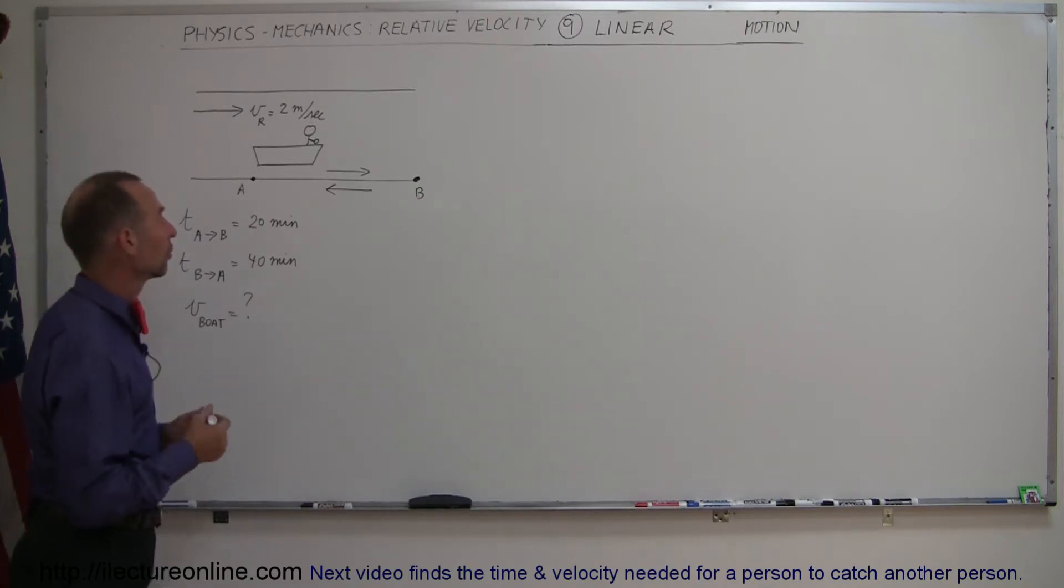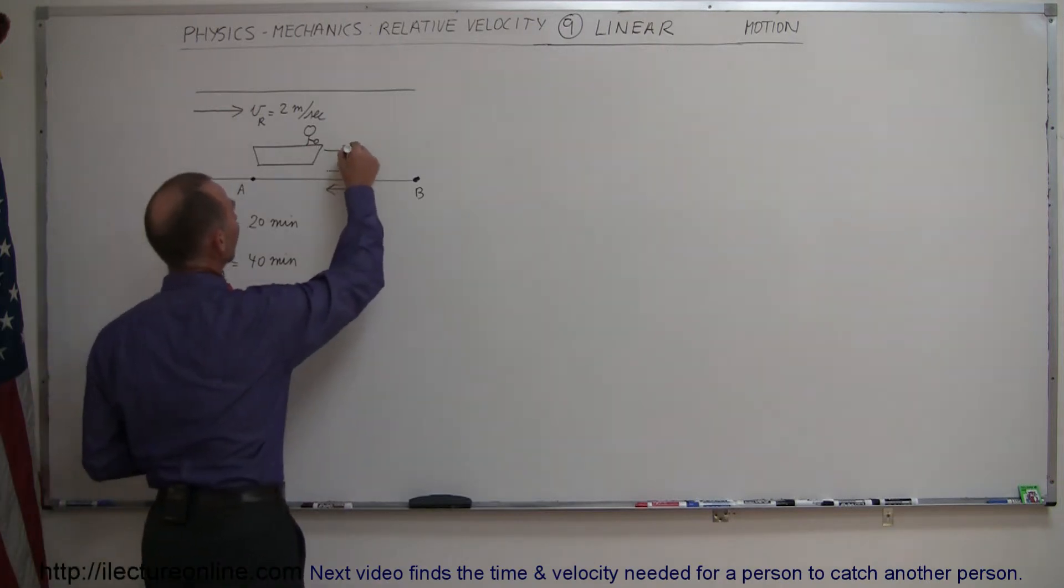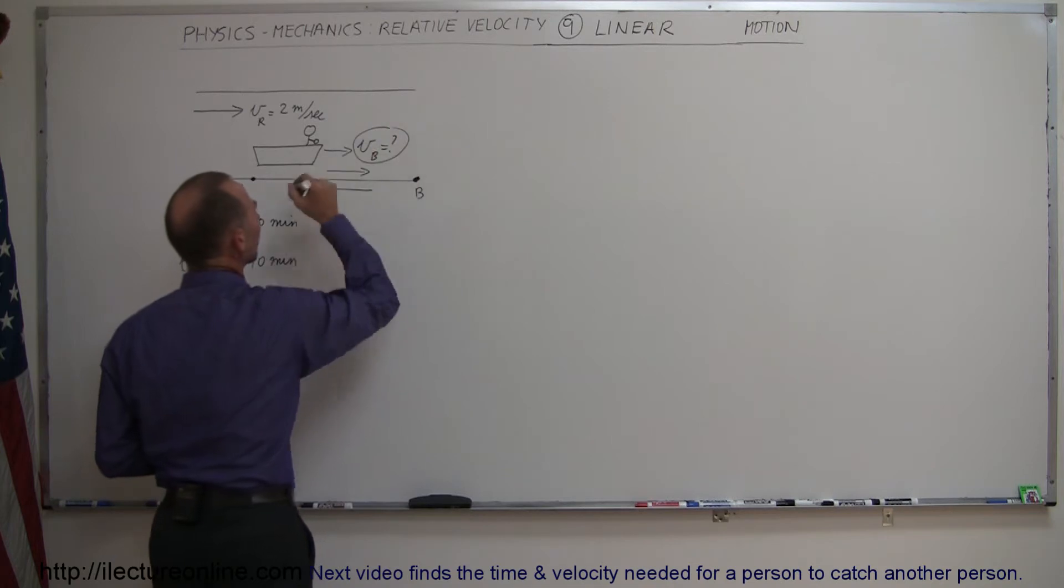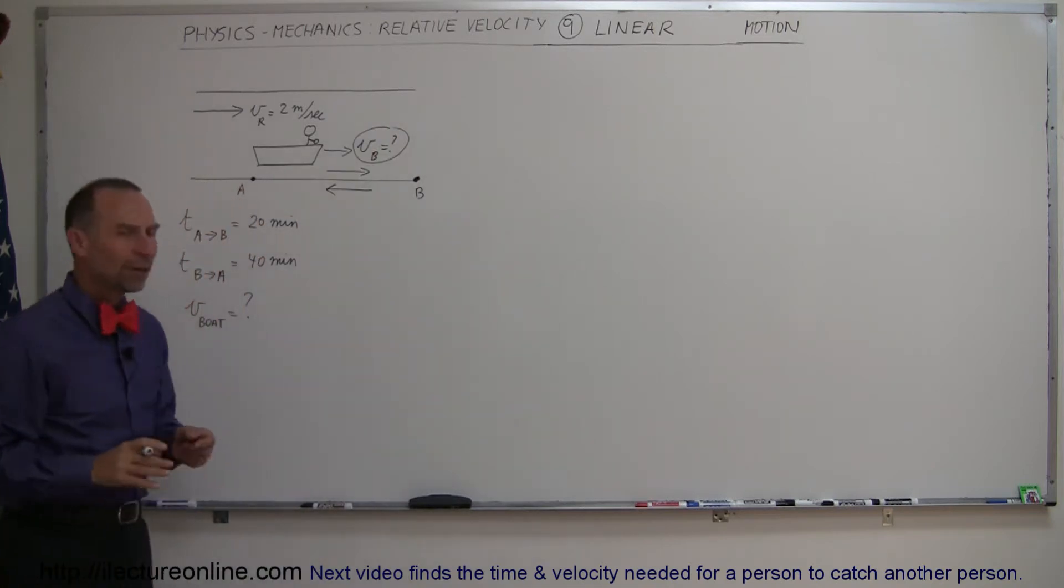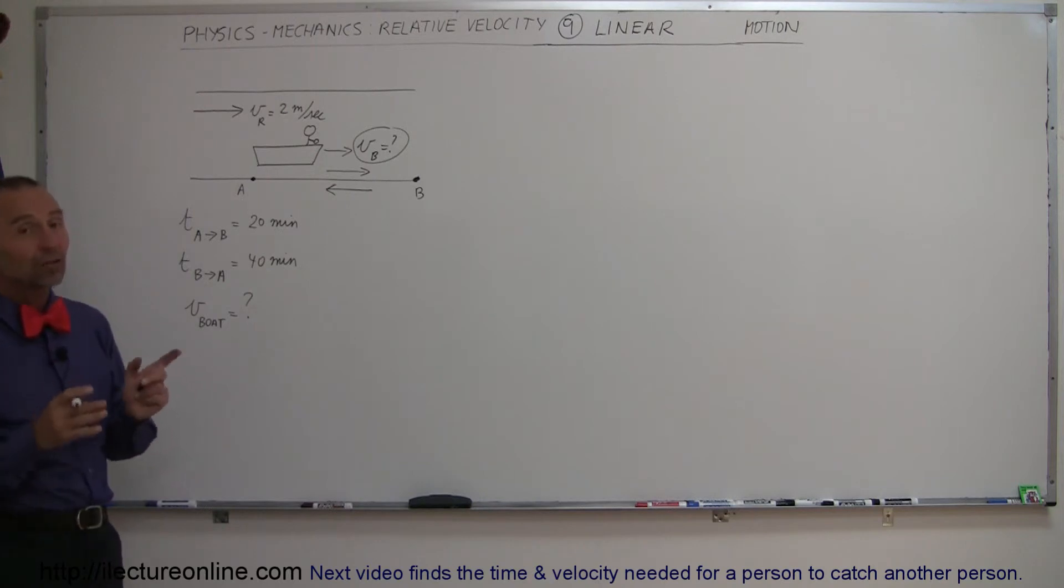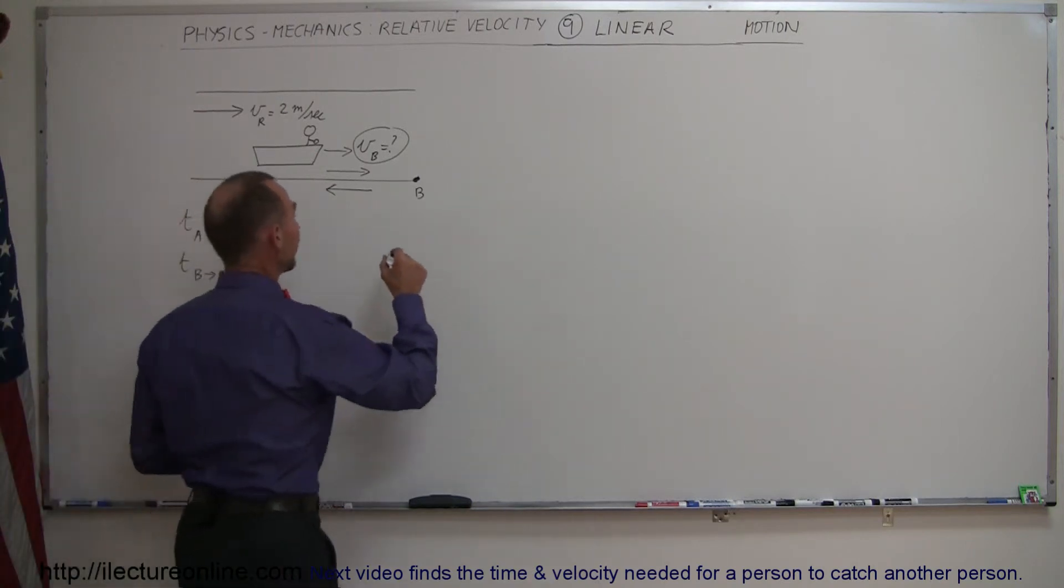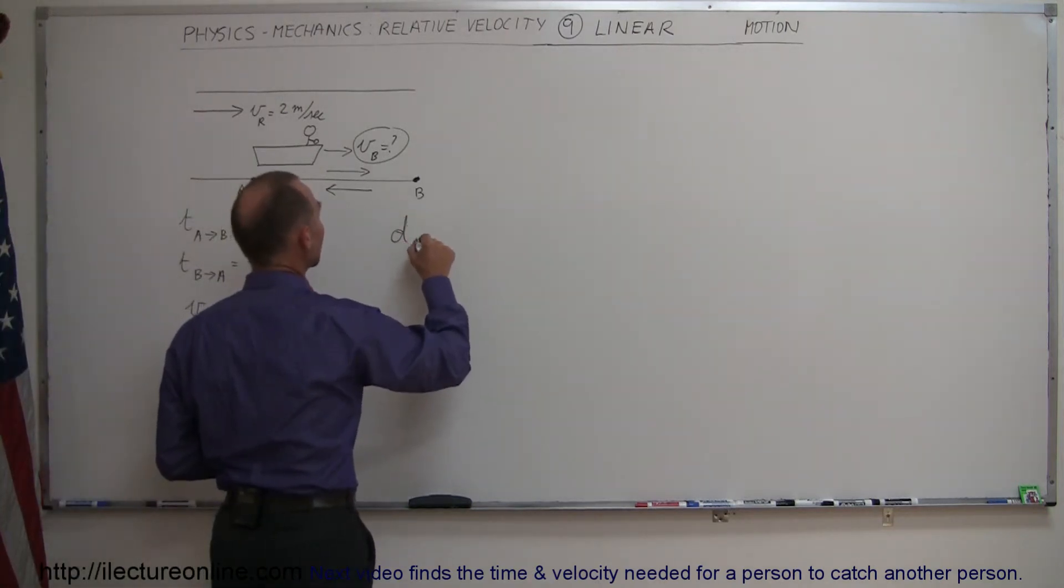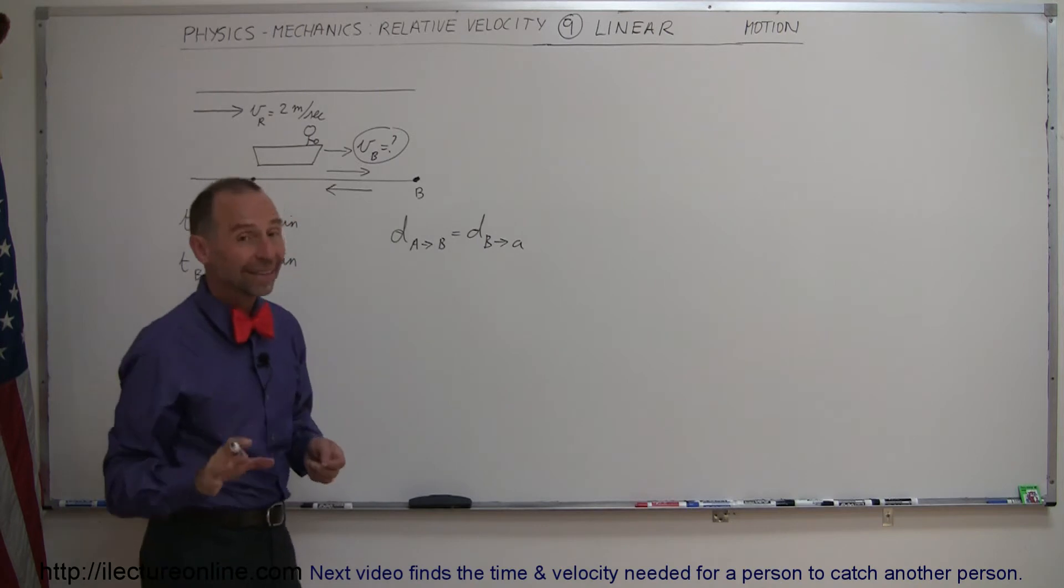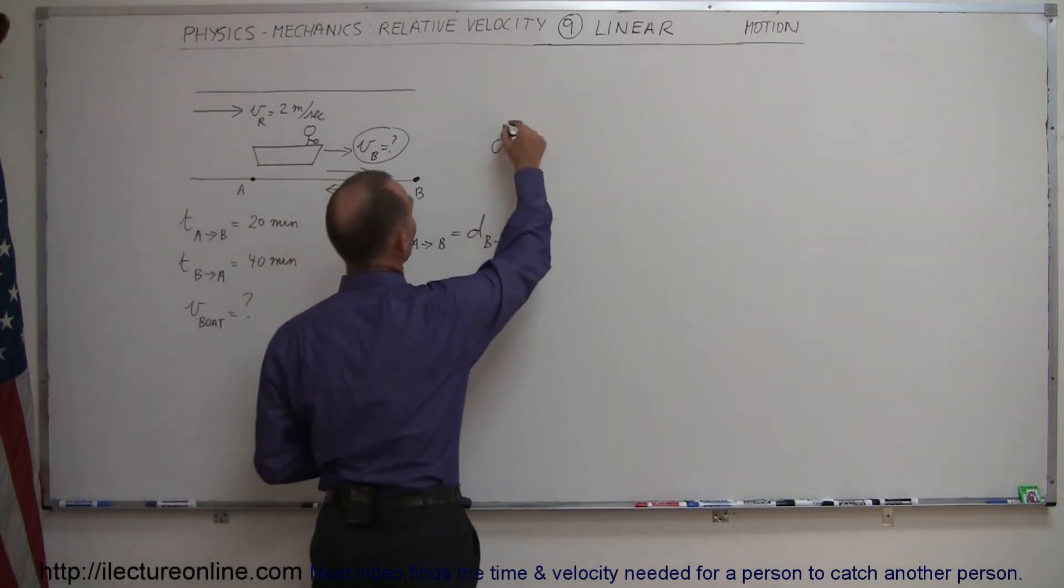Alright, so the question then becomes what is the V of the boat relative to the water that it's in? So the way you approach a problem like this is to realize that the distance traveling in both directions is equal. So that means that the distance going from A to B must equal the distance going from B back to A. And then we also have the equation that distance is equal to velocity times time.